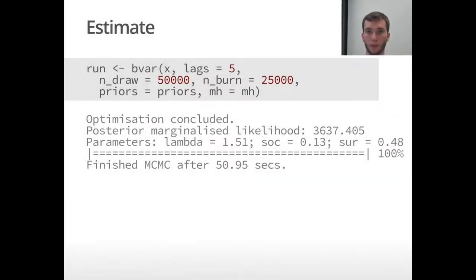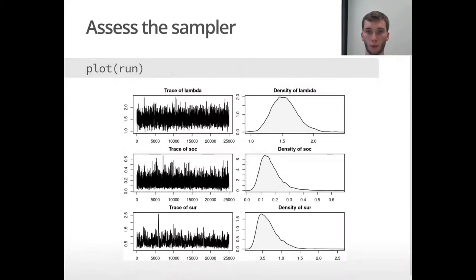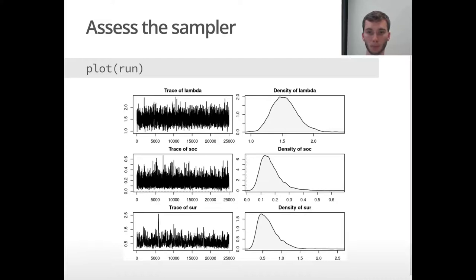After setting these things up, we provide them to the main function bvar together with the data x, information about the lag structure, and how many draws to take. When we run the function it prints some preliminary output as well as the time it took for the MCMC chain to conclude. After that we can assess the convergence of our hyperparameters. An easy and accessible way to do that is to call the automatic plot function, which creates trace and density plots for the hyperparameters of the priors that we treated hierarchically. From this we can already see that the hyperparameters converged.